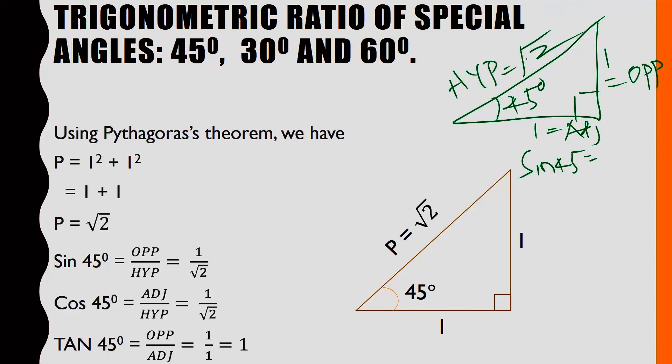So if I need to find sin 45°, for example, it will be opposite over hypotenuse. Here is now opposite because the angle of interest 45 is facing the other side. This is the hypotenuse. So sin 45° will be opposite over hypotenuse, which is 1/√2. Then cos 45° is also adjacent over hypotenuse, which is 1/√2. Then tan 45° is 1 over 1, which is 1. If you watch very carefully, you will see that sin 45° equals cos 45°, which equals 1/√2.